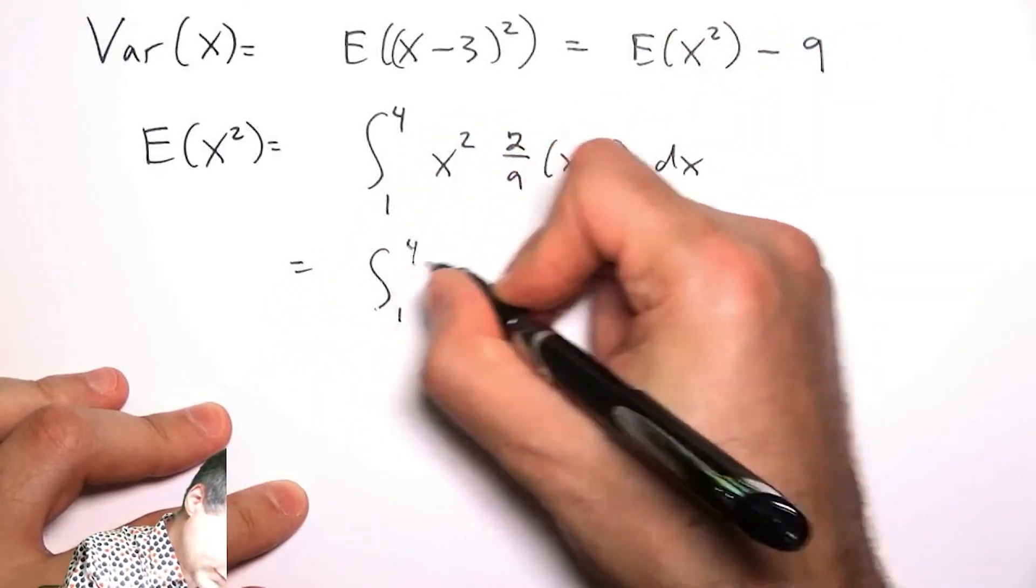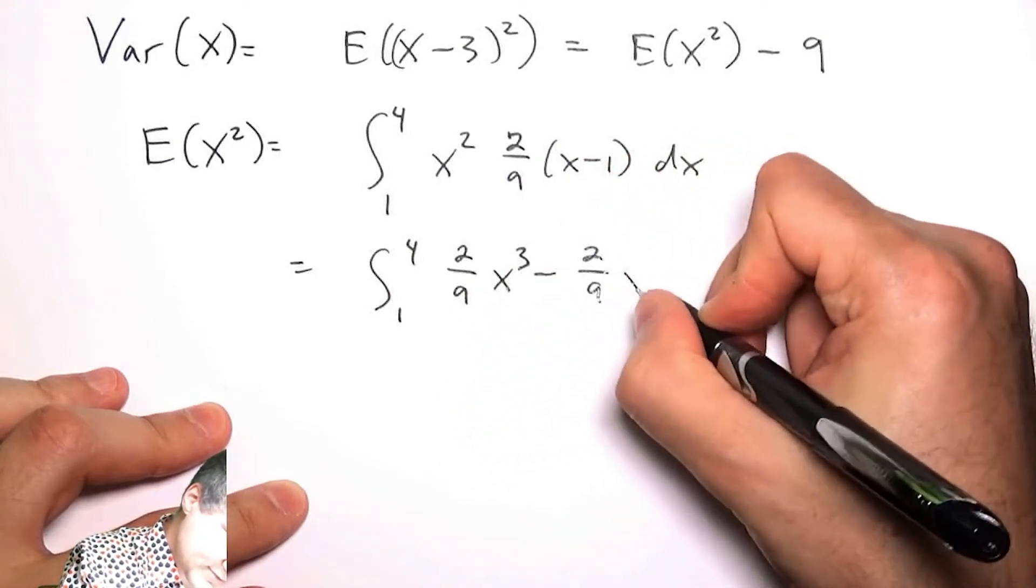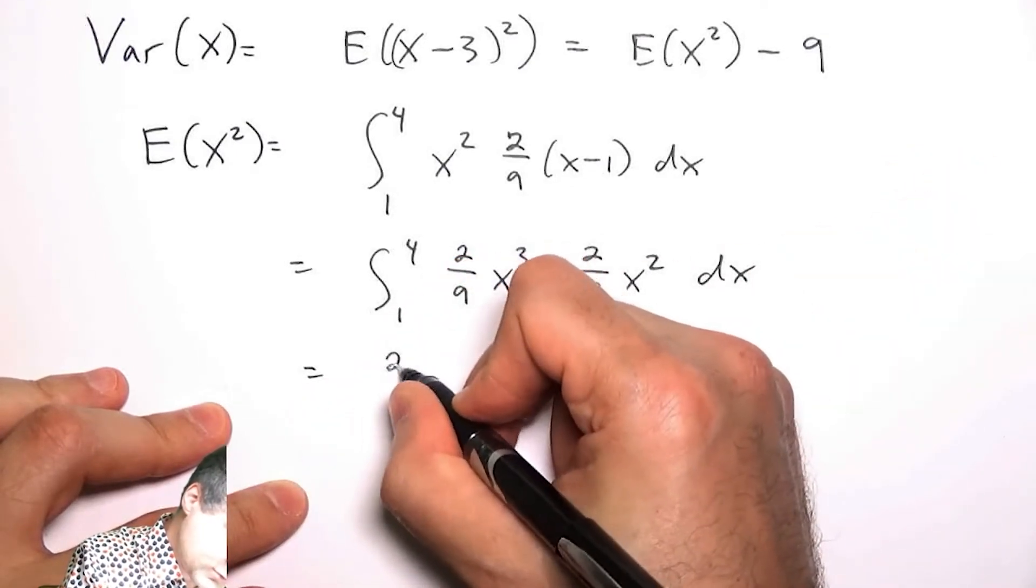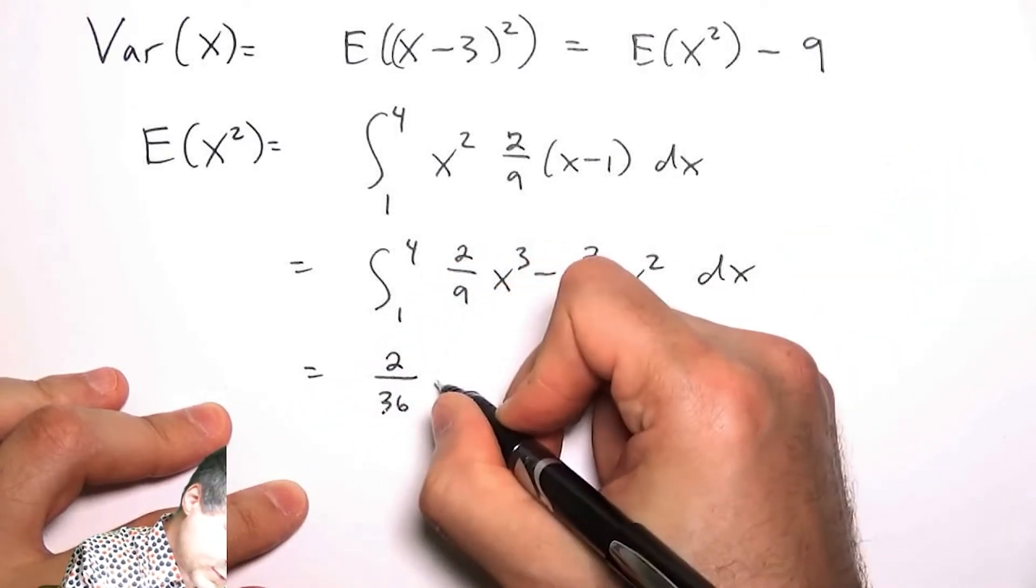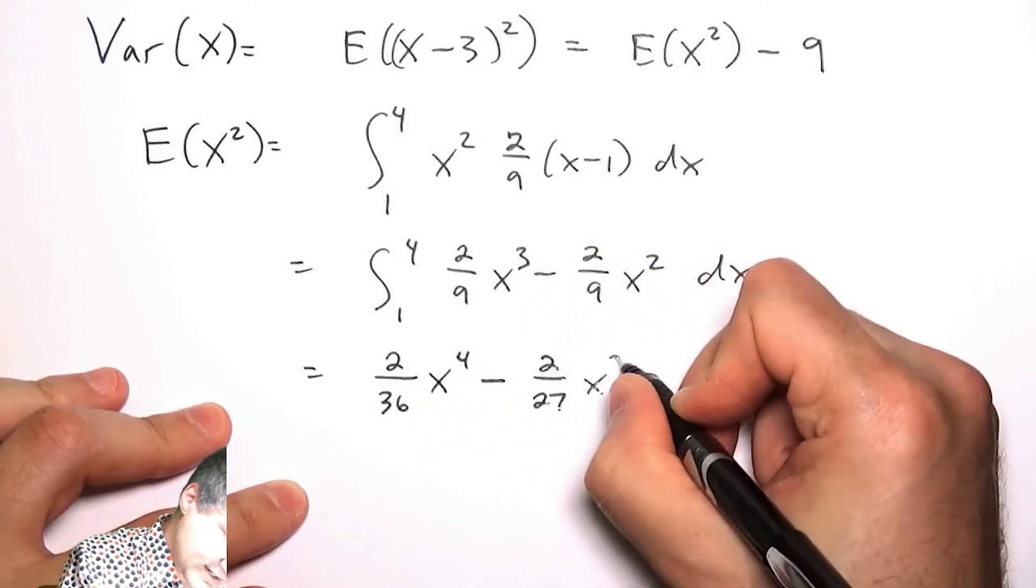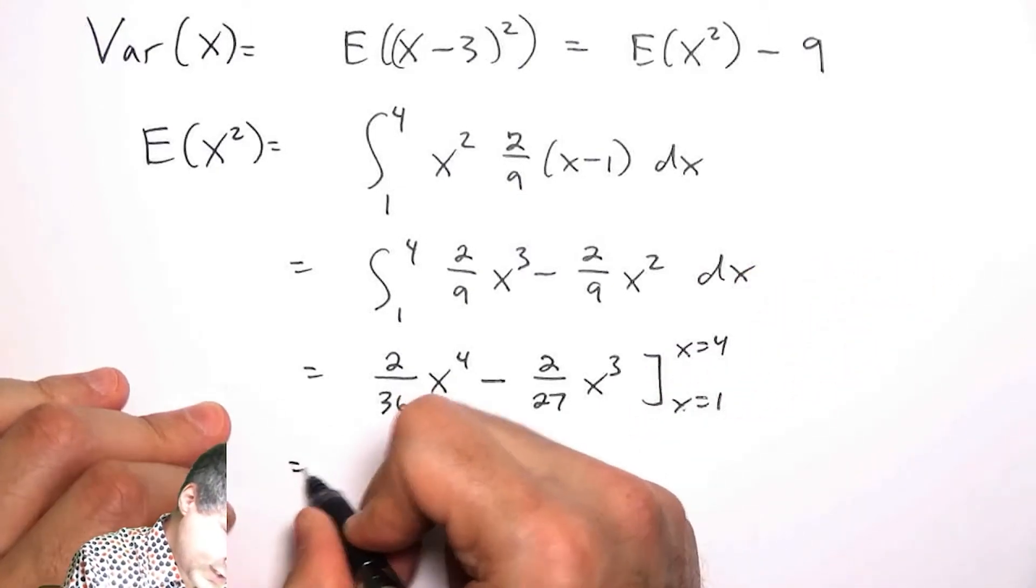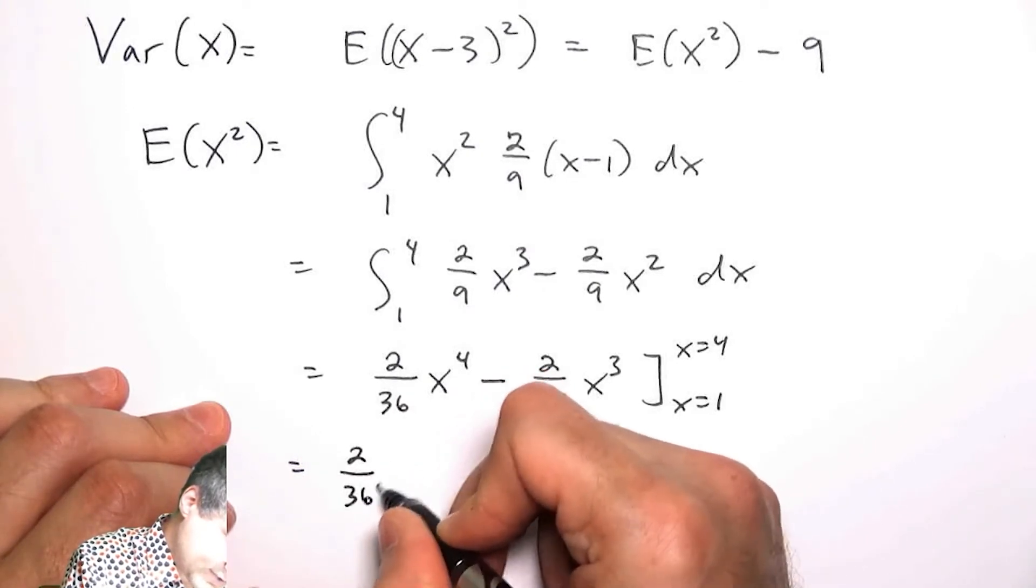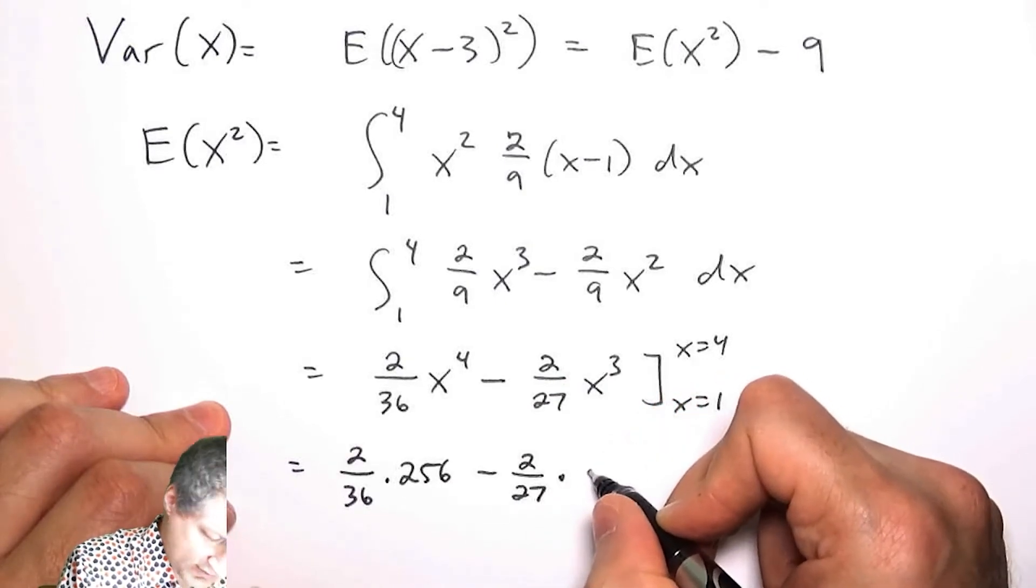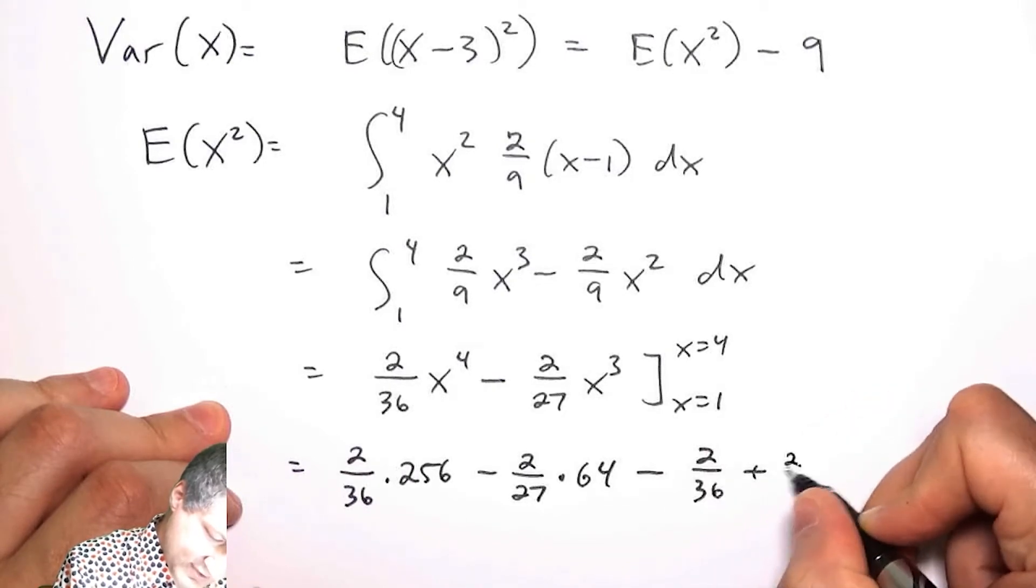Now I've got this integral: 2/9 x³ - 2/9 x² dx, which is 2/36 x⁴ - 2/27 x³, evaluated from x=4 to x=1. So I would get 2/36 times 256 minus 2/27 times 64, minus 2/36 plus 2/27.